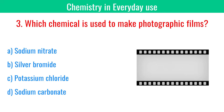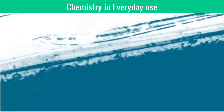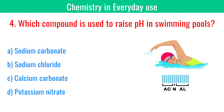Which chemical is used to make photographic films? Silver bromide. Which compound is used to raise pH in swimming pools? Sodium carbonate.